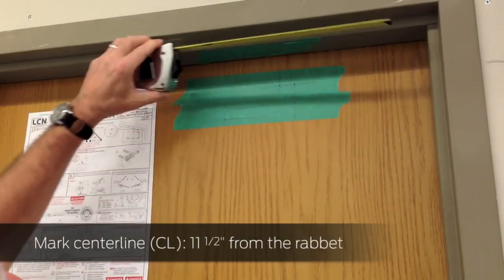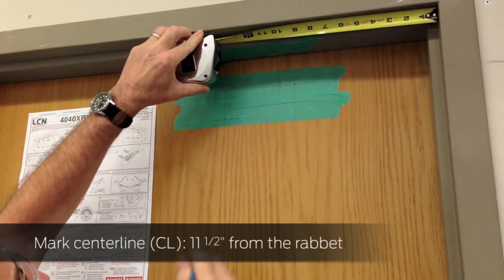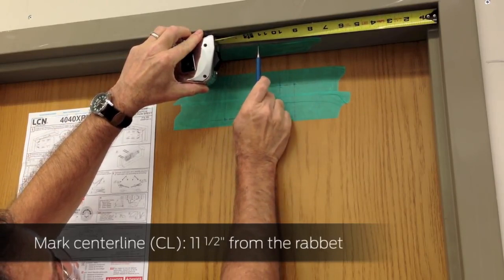Mark a line eleven and a half inches in from the rabbit perpendicular to the soffit. This is the center line.